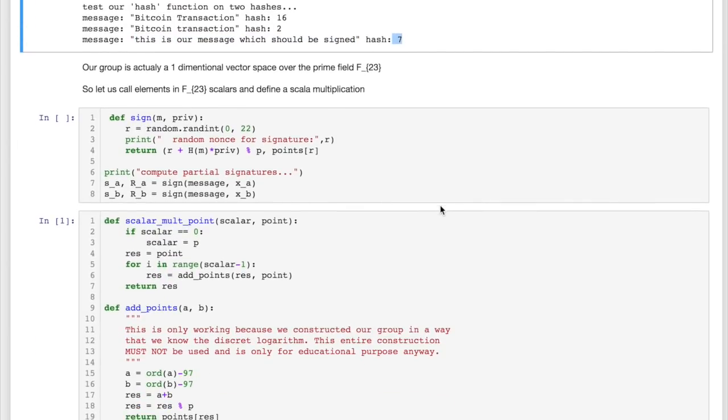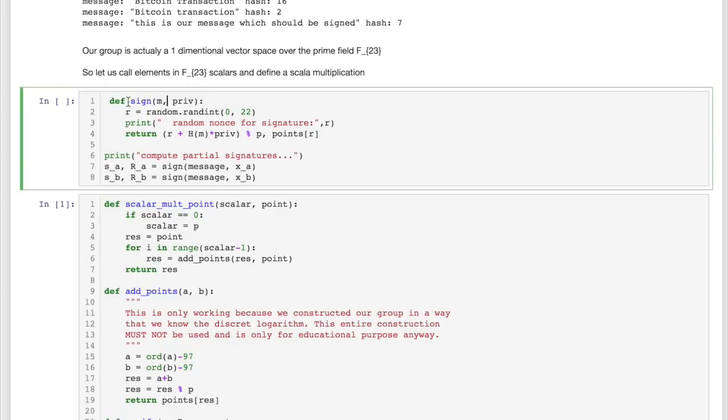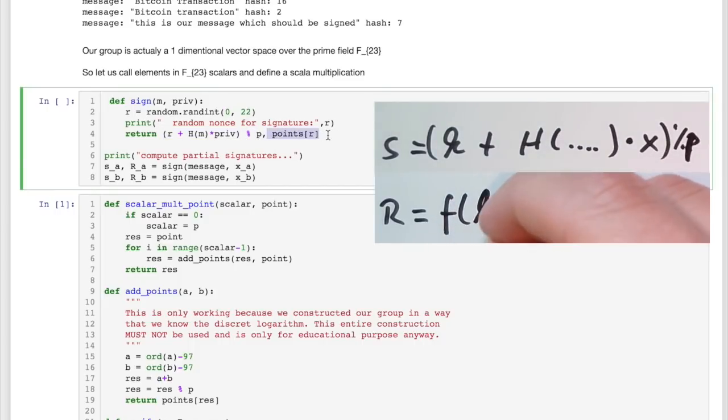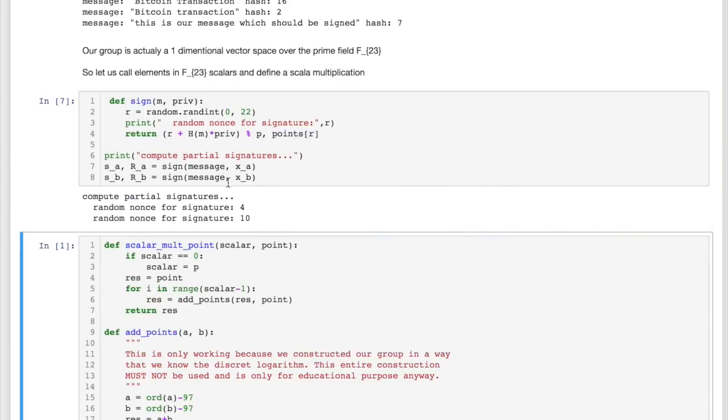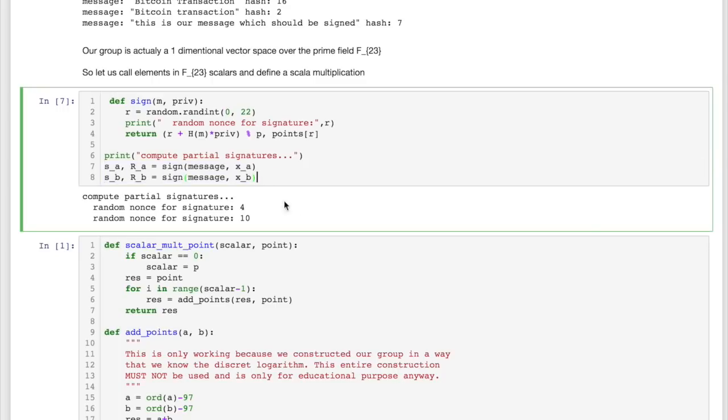Let's go to the signing operation. I have defined a function sign, which takes two arguments, a message and a private key. And as you can see, basically, after creating some random value, here I compute the signature, and this is exactly the formula that we had for S before, in particular, when you also do the modulo operation, and this is the big R value, the nonce. So let's execute this code. And before I print the signatures and show you what they look like, let me also go for the verification part, because then I can do both in one step.